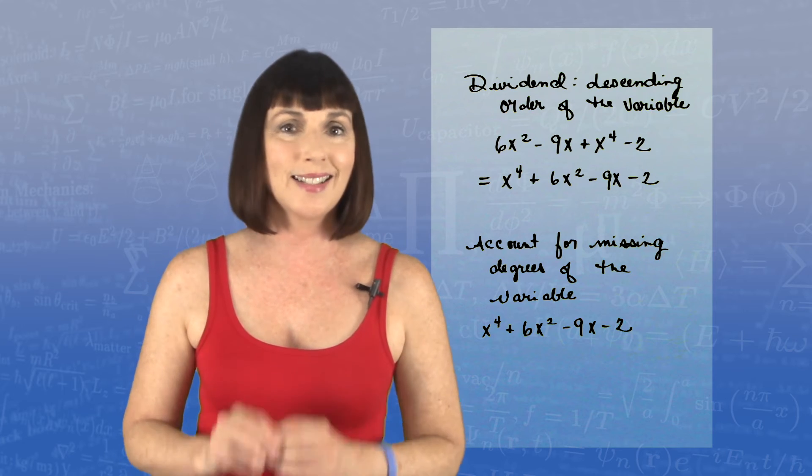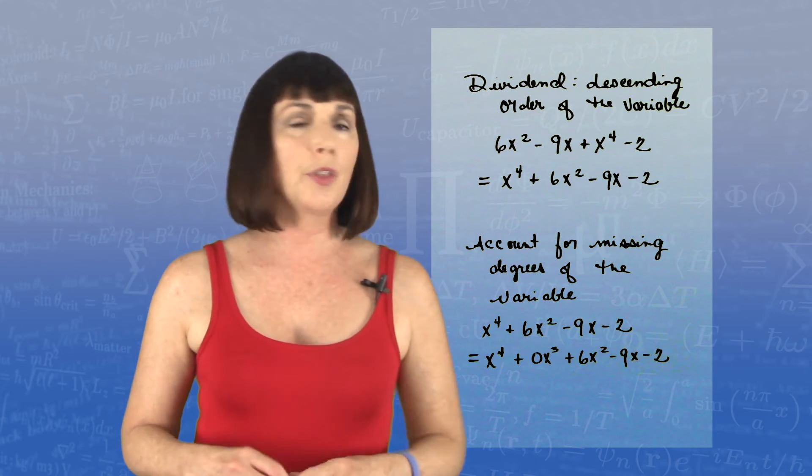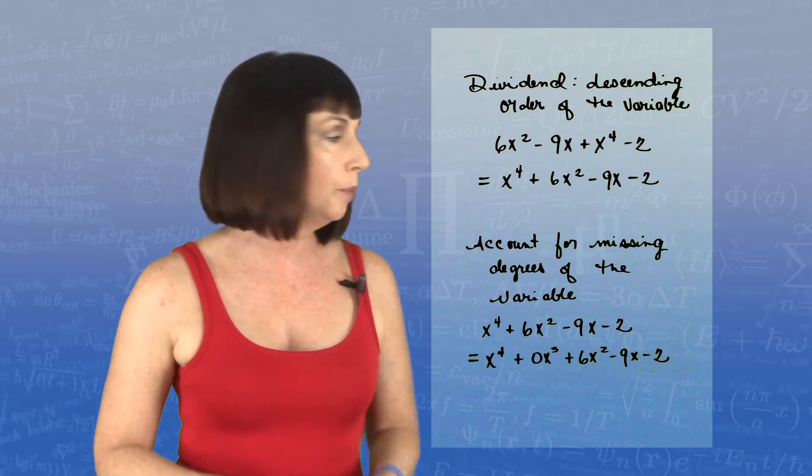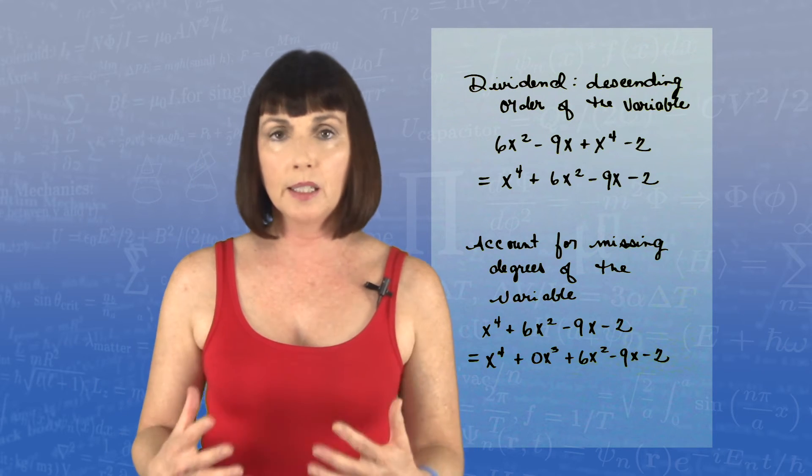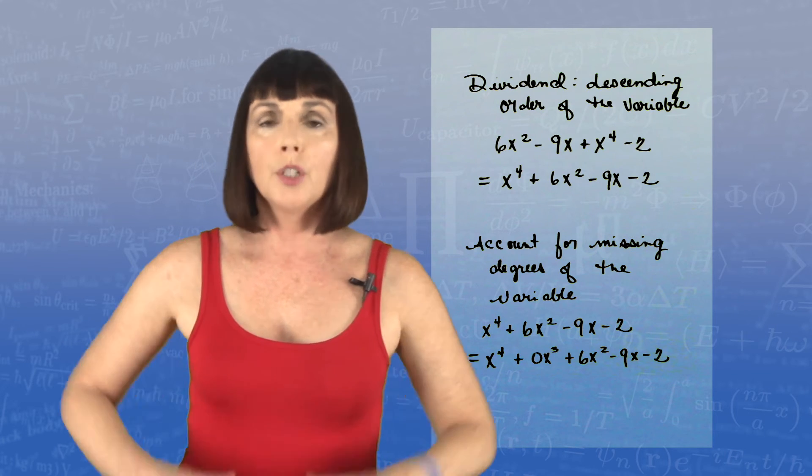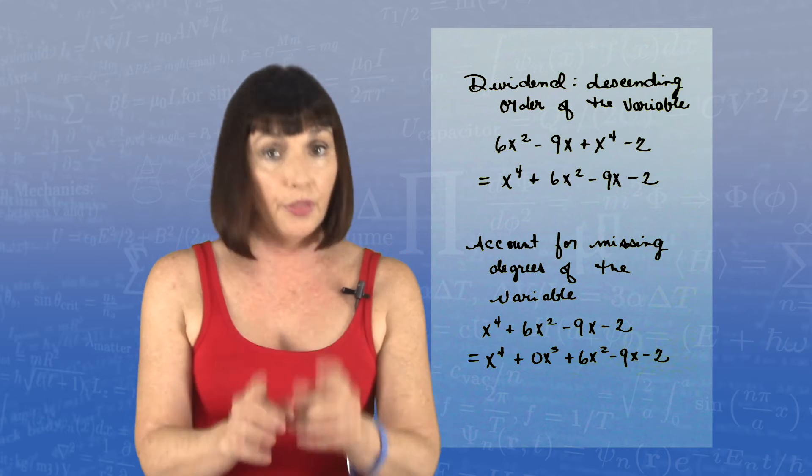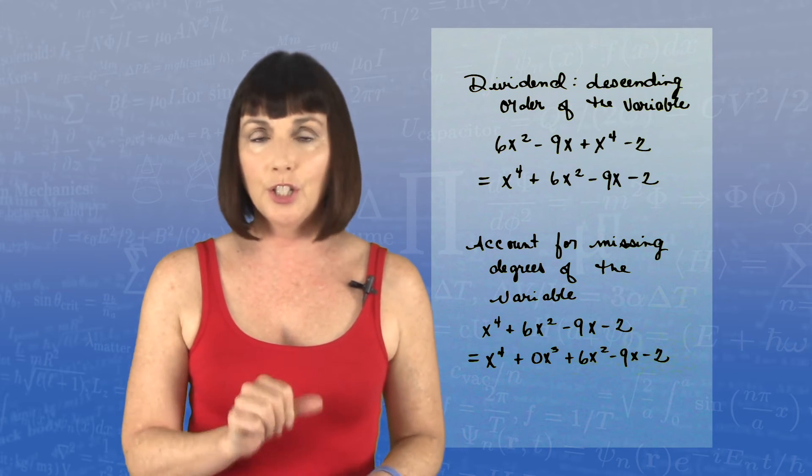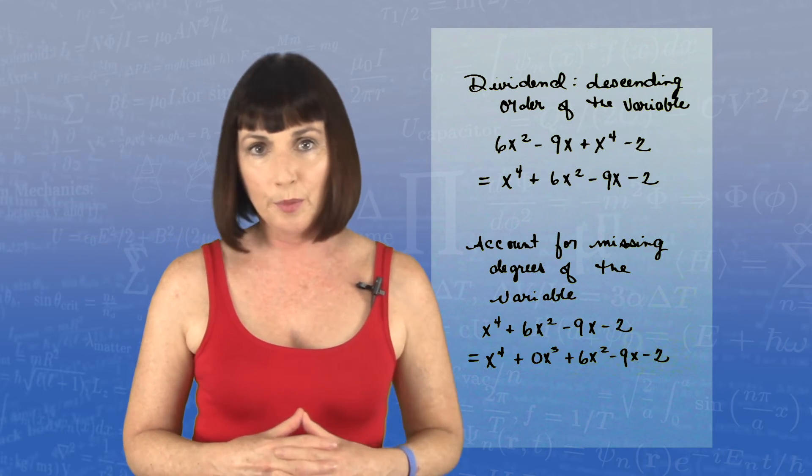So we would rewrite this as x to the fourth plus 0 times x cubed plus 6x squared minus 9x minus 2. So you must get your dividend, the thing you're dividing, in this shape before you start doing your polynomial division.